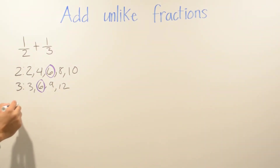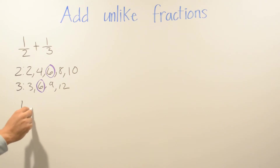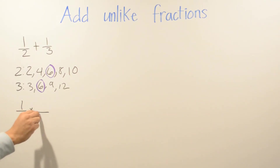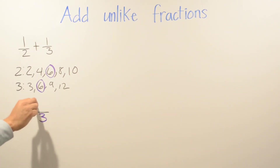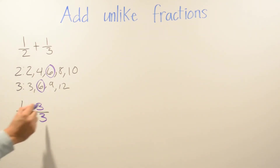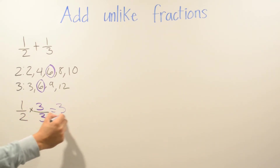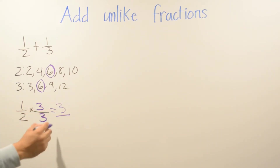So we're going to multiply one-half by 3 — it took us three steps to reach 6. Whatever we do on the bottom we always have to do on the top, and vice versa. So we multiply: 1 times 3 is 3, and 2 times 3 is 6.